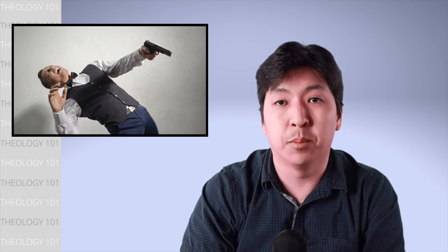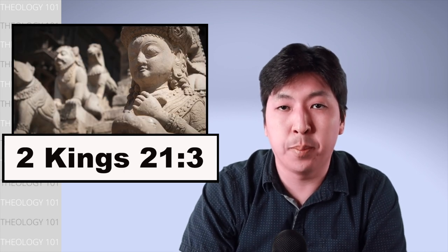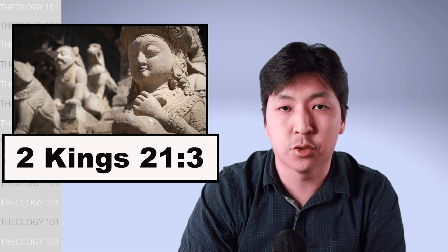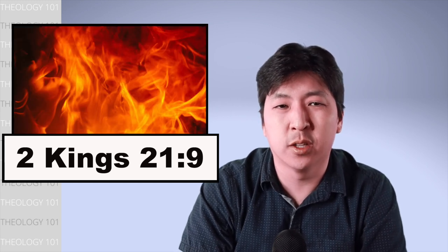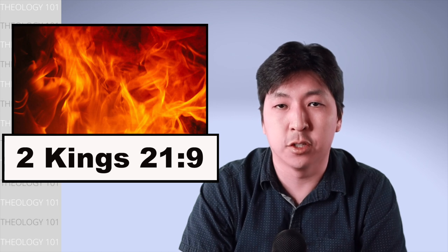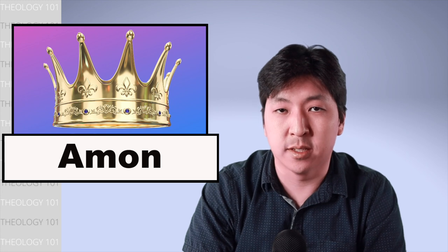Later, Hezekiah's son, Manasseh, became king of Judah and ruled for fifty-five years and did evil by rebuilding the high places and altars for Baal and Asherah that Hezekiah destroyed. Manasseh burned his son as an offering and led Israel to do more evil than other nations had done whom God destroyed.